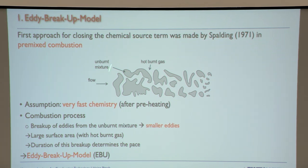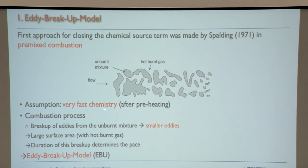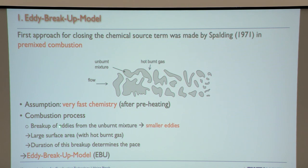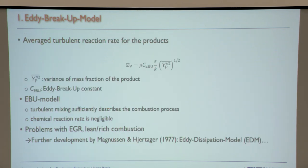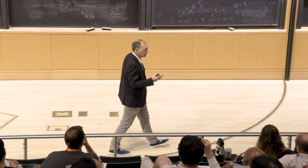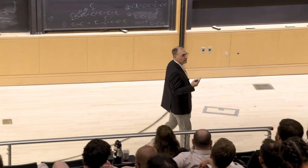The assumption is that after preheating you have very fast chemistry. The breakup of eddies gives you smaller eddies that increase the flame area and thus faster combustion. The duration of this breakup determines how fast combustion proceeds — that's why it's called the eddy breakup model. The reaction rate is then replaced by the turbulent timescale ε/k, which has units of inverse time.